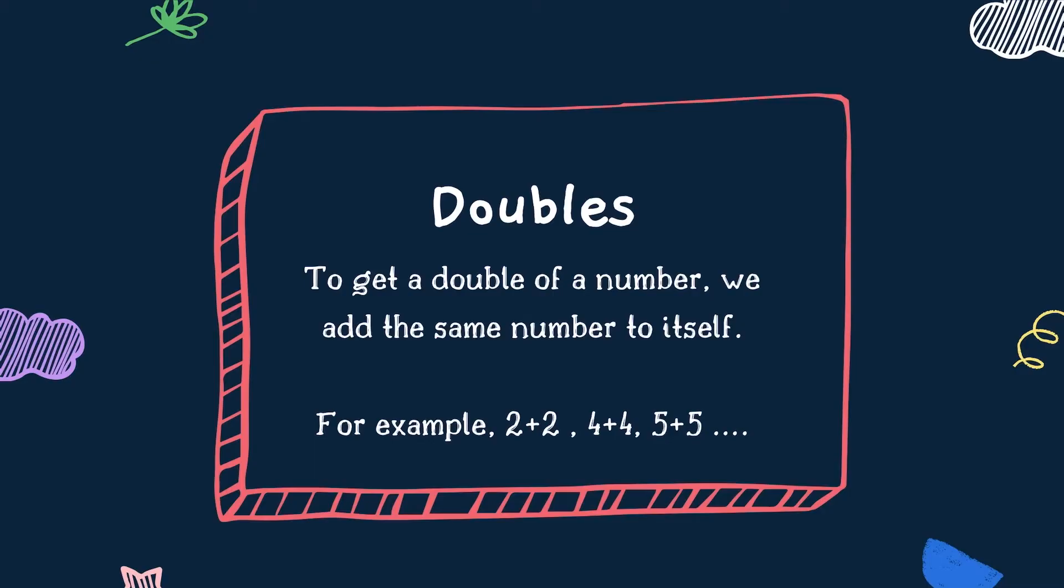What's the double strategy? To get the double of a number, we add the same number to itself. For example, 2 plus 2, 4 plus 4, 5 plus 5. So, doubles means we add the same number to itself.